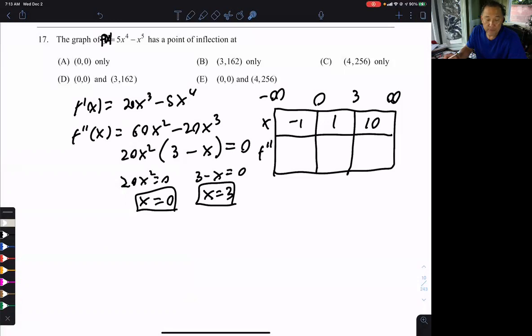But what I want to know is what happens to the second derivative, because the justification for a point of inflection is the second derivative changes signs. So I need to see if the second derivative changes signs. So let's plug in negative 1 here and here.